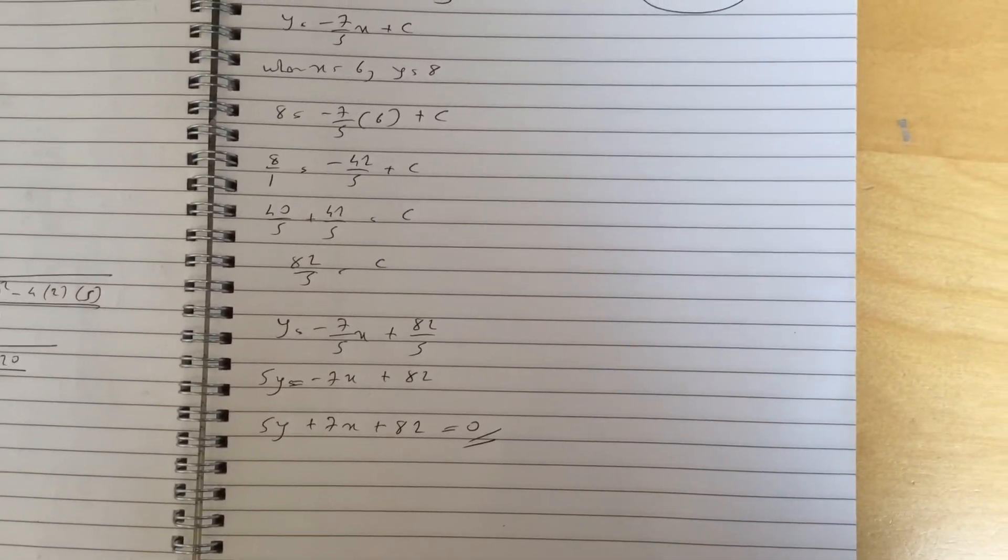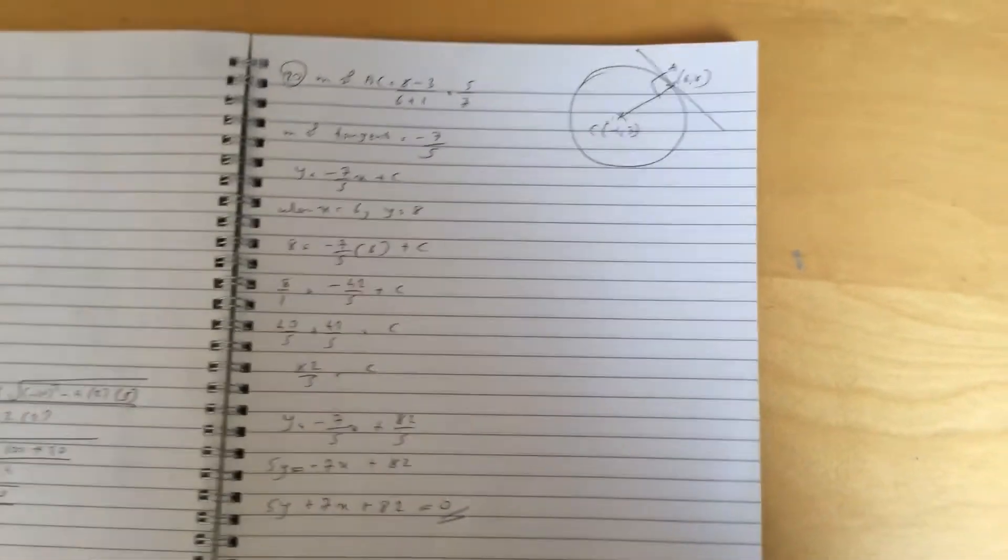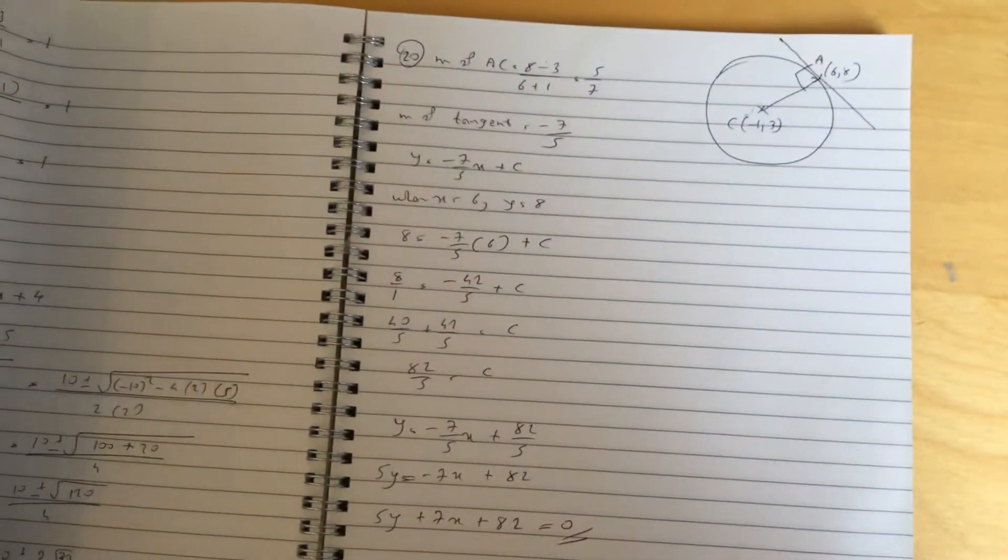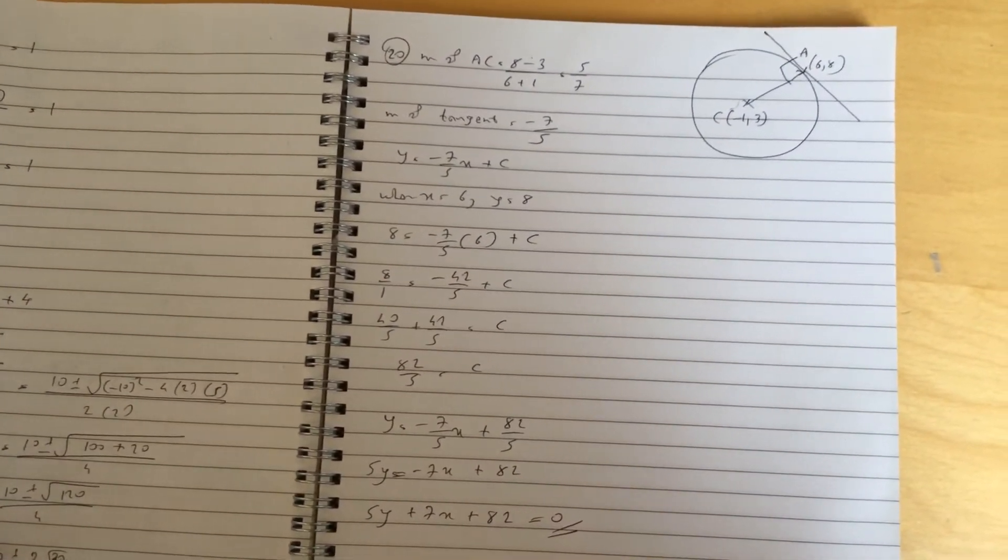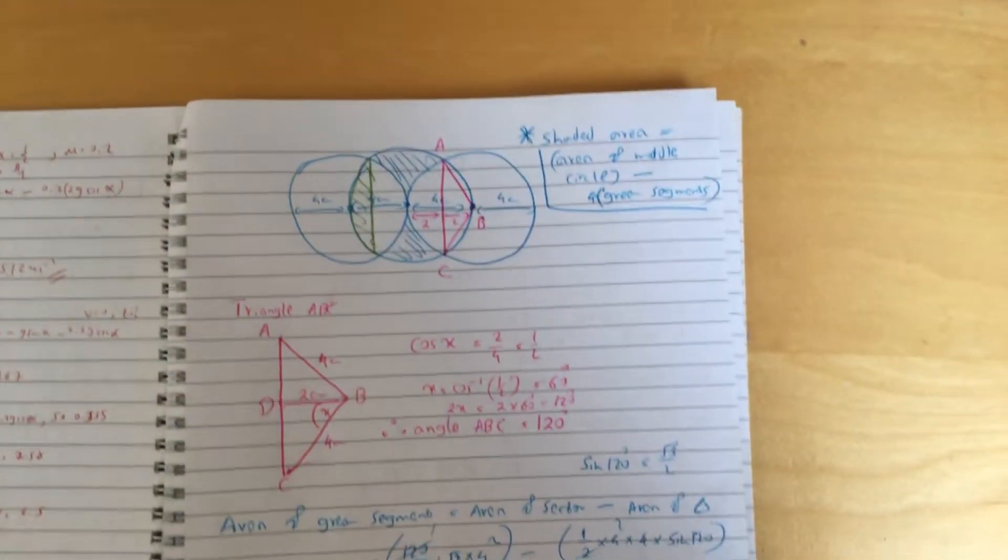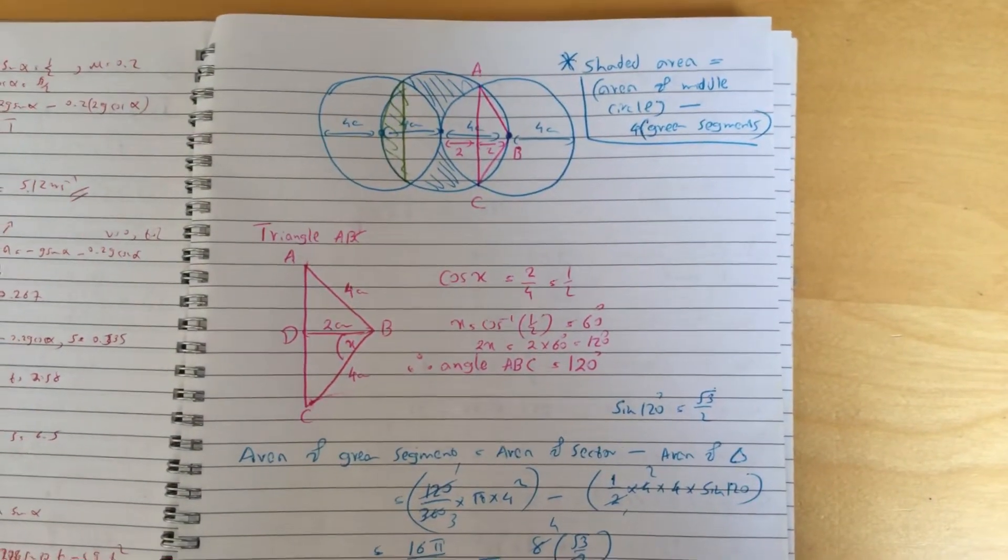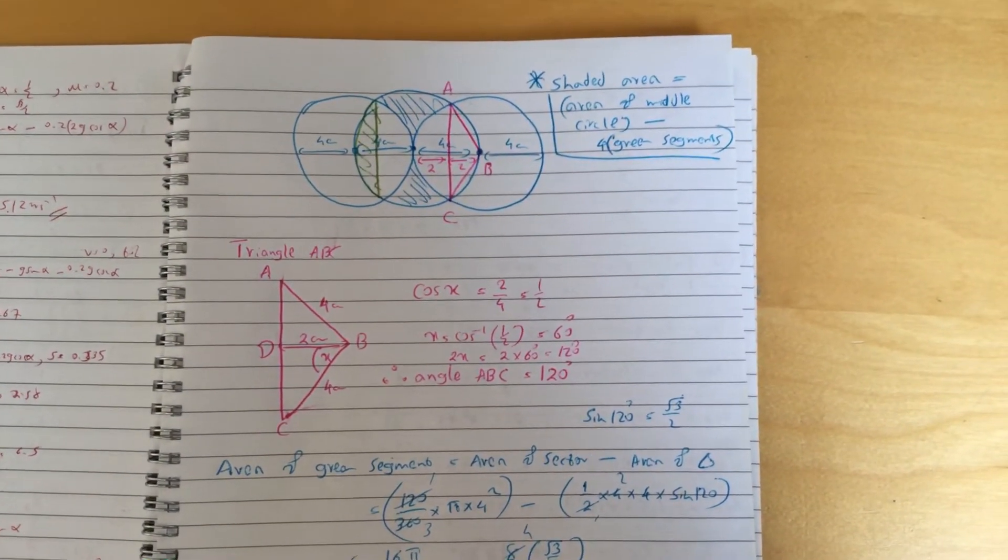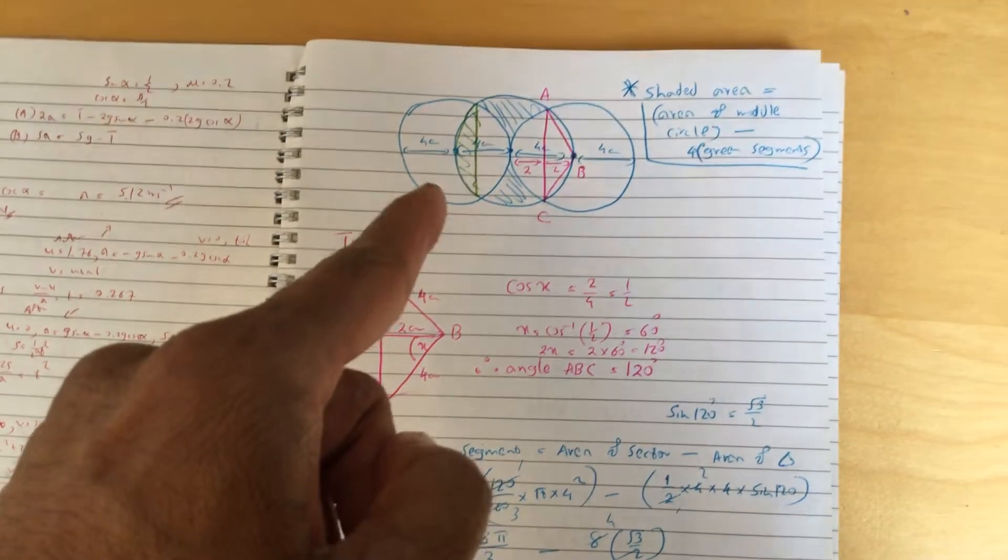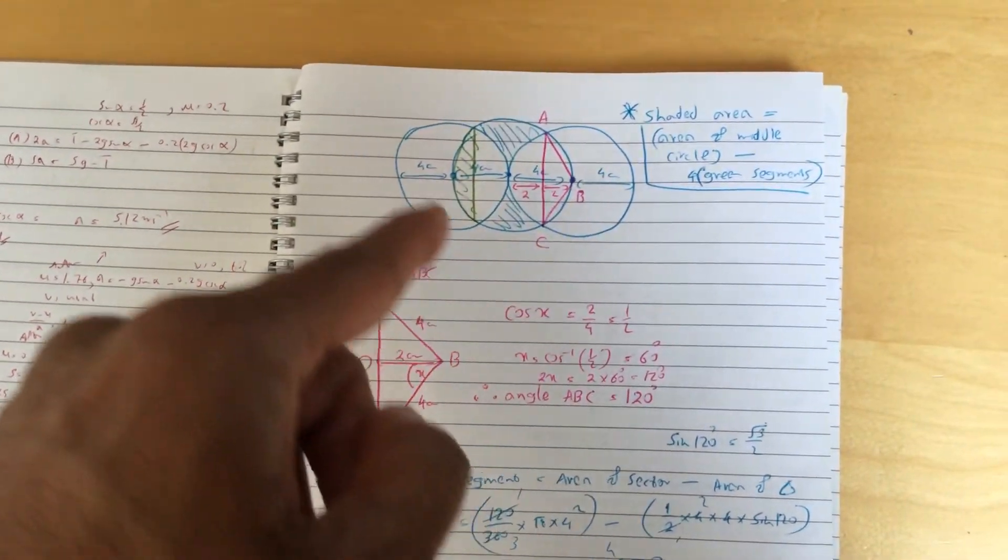And then the last question. Obviously this is a question that everyone struggled with. I posted a separate video for this, but I'll go through this again. This is question 21. You have these circles here.